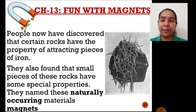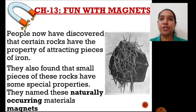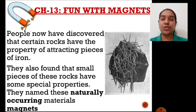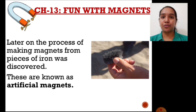Later on, people discovered a few types of rocks that have the property of attracting light particles or pieces made of iron or any metal. They also realized that these small rocks or pieces of large rocks have some special properties. As they were found naturally from the earth, these were called naturally occurring magnets. Man is so intelligent that later on, understanding the nature of magnets, he himself made magnets from pieces of iron, and these man-made magnets were known as artificial magnets.